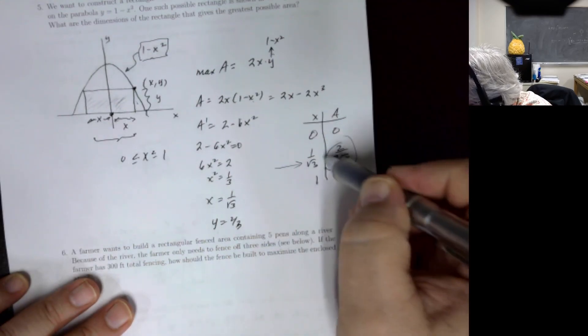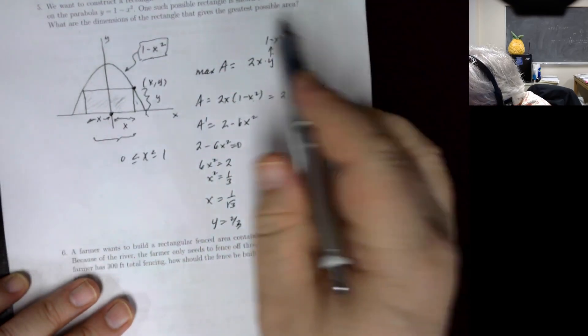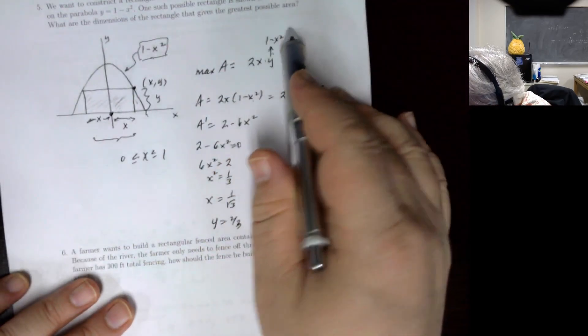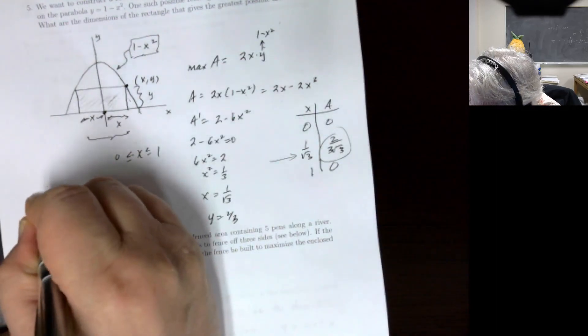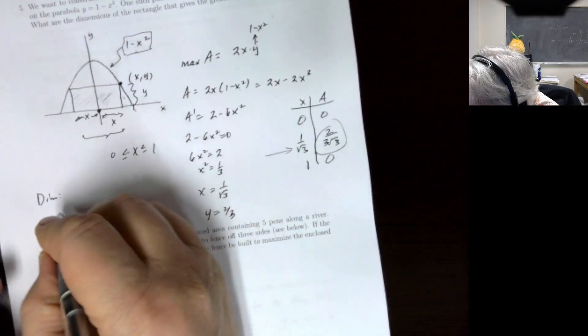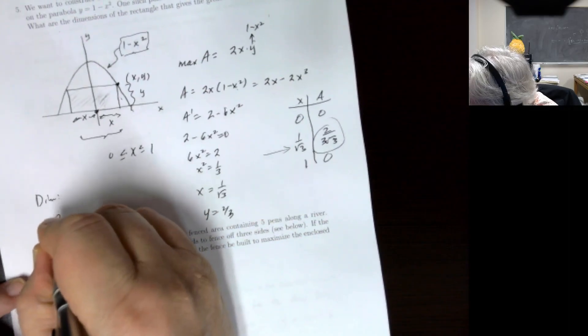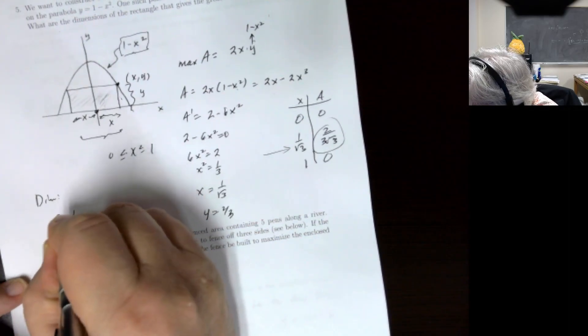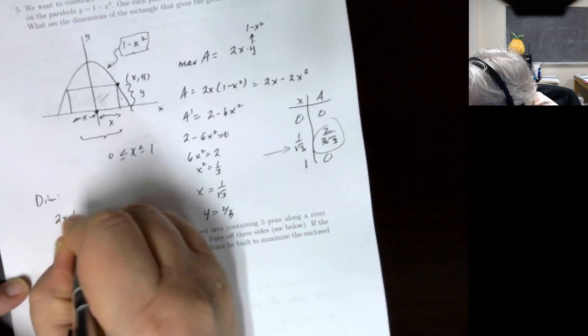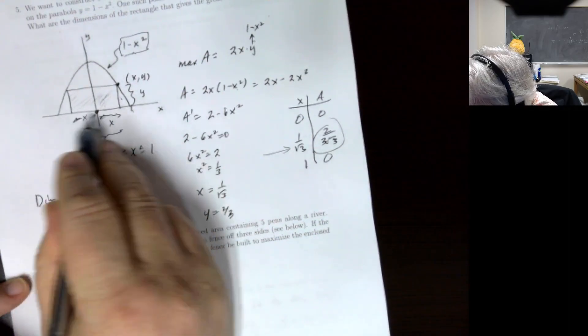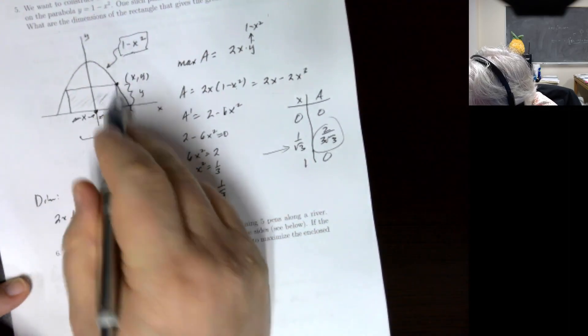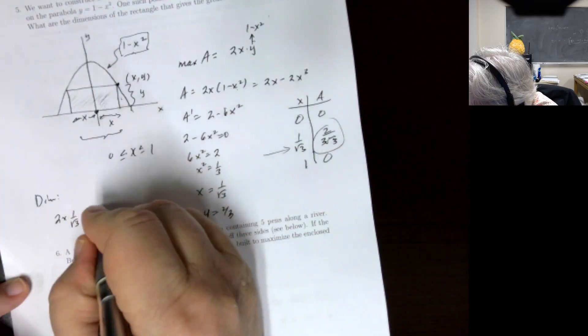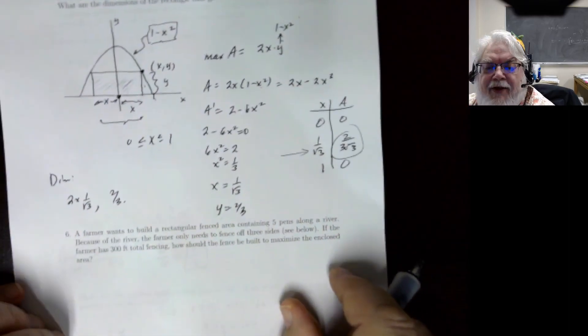The maximum occurs at x equals 1 over the square root of 3. The dimensions of the rectangle are: full width equals 2 times 1 over the square root of 3, and height equals 2/3.